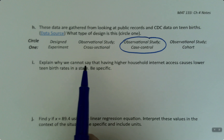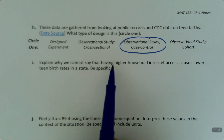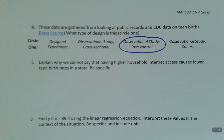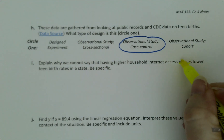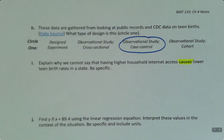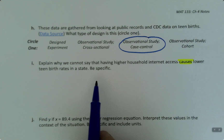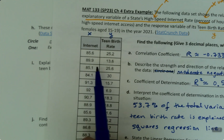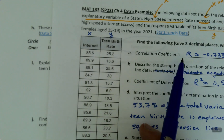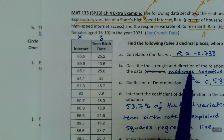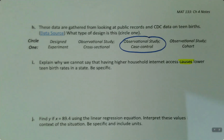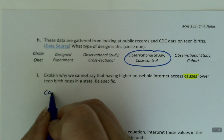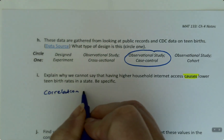So now, why can we not say that having higher household internet access causes lower teen birth rates in a state? Somebody looking at this might say, hey, I want to have lower teen birth rates — all I've got to do is increase the internet and, like magic, it'll work. But no, that's not going to work. It's not the case that internet causes lower teen birth rate, although they do go hand in hand. There is a strong or moderate negative relationship here.